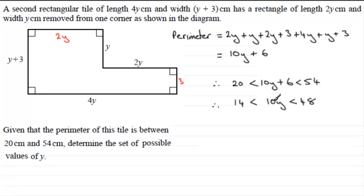Now all I need to do is divide throughout by 10. So therefore we've got 14 divided by 10 which is 1.4, is less than 10y divided by 10 which is y, and 48 divided by 10 is 4.8. So there's our possible set of values of y: y lies between 1.4 and 4.8.